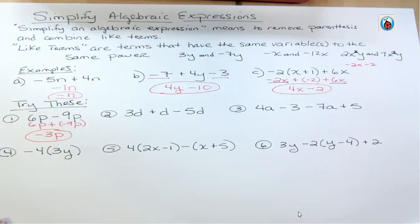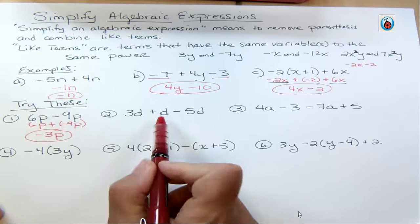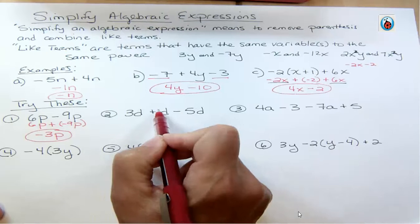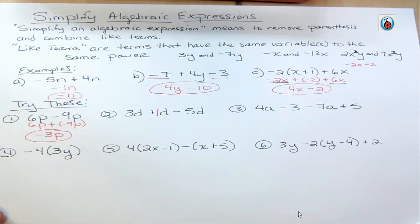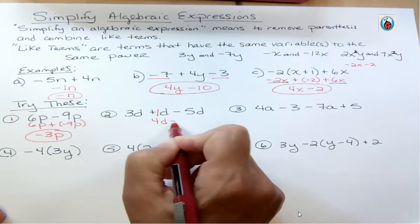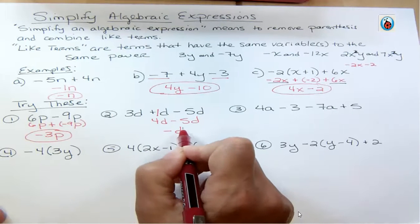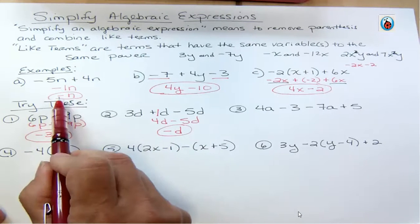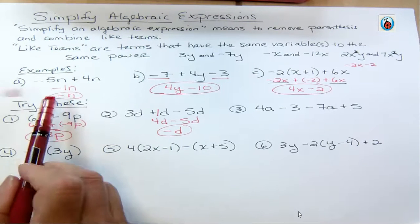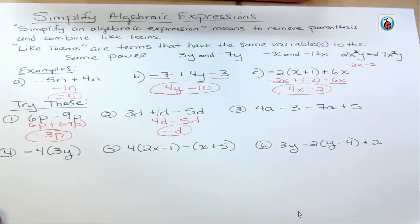For number two, all terms are like terms because they all have D to the first power. Adding up the positives: I have 3D, and that lone D is really 1D, so 3 + 1 = 4D. If I have four of something and try to take five away, I'm one in the hole — so the answer is −1D, or just −D. It's helpful to work with signed numbers fluently, because variables can't be entered into a calculator.